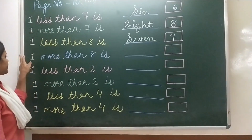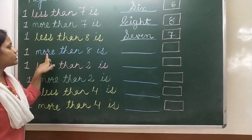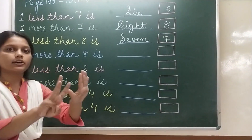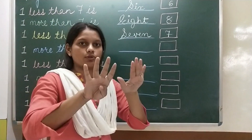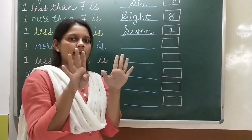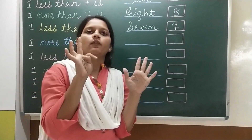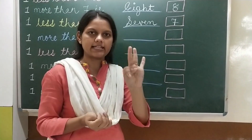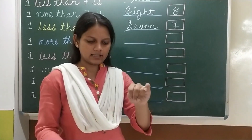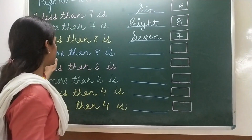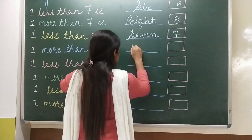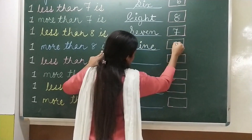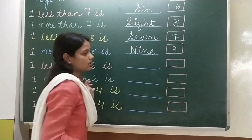Next: 1 more than 8. So 8 and 1 more — add 1. How many fingers? 1, 2, 3, 4, 5, 6, 7, 8, 9. 1 more than 8 is 9. Number 9 in the box.